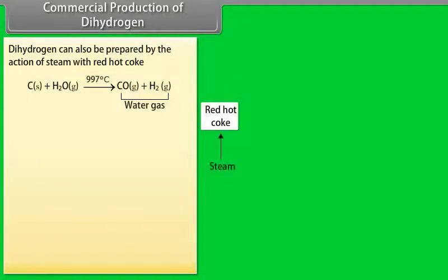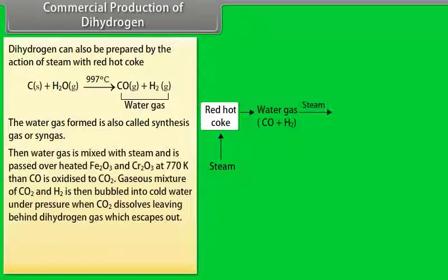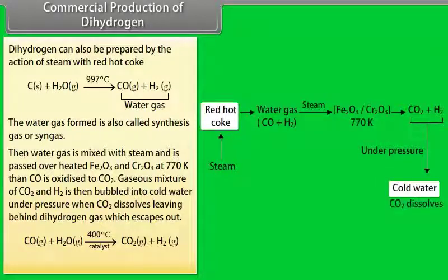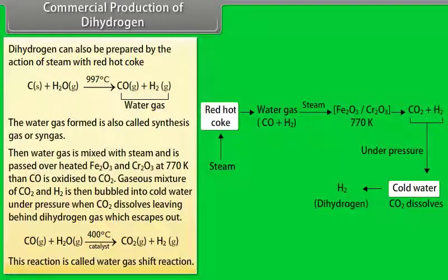Commercial production of dihydrogen. Dihydrogen can be prepared by the action of steam with red hot coke. The water gas formed is also called synthesis gas or syngas. Then water gas is mixed with steam and is passed over heated Fe2O3 and Cr2O3 at 770 Kelvin, then CO is oxidized to CO2. Gaseous mixture of CO2 and H2 is then bubbled into cold water under pressure when CO2 dissolves leaving behind dihydrogen gas which escapes out. This reaction is called water gas shift reaction.